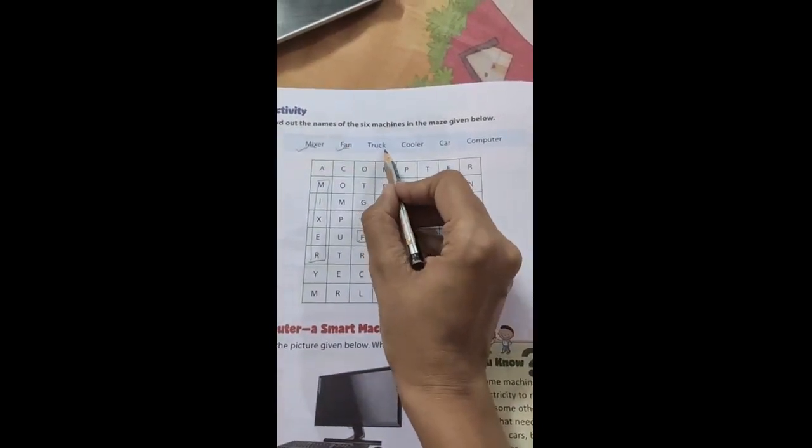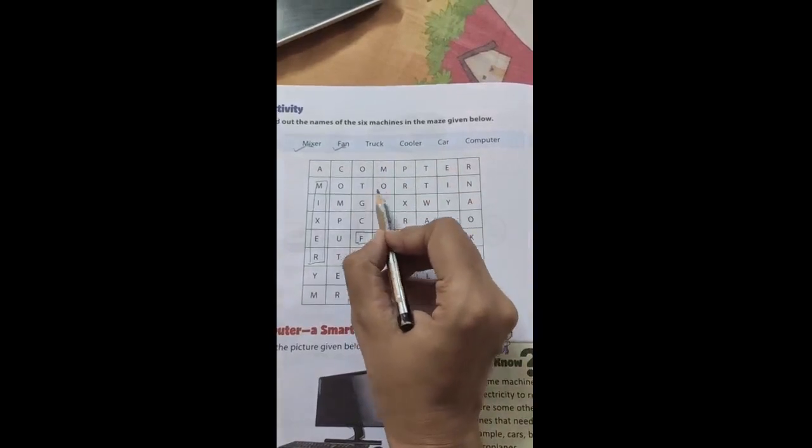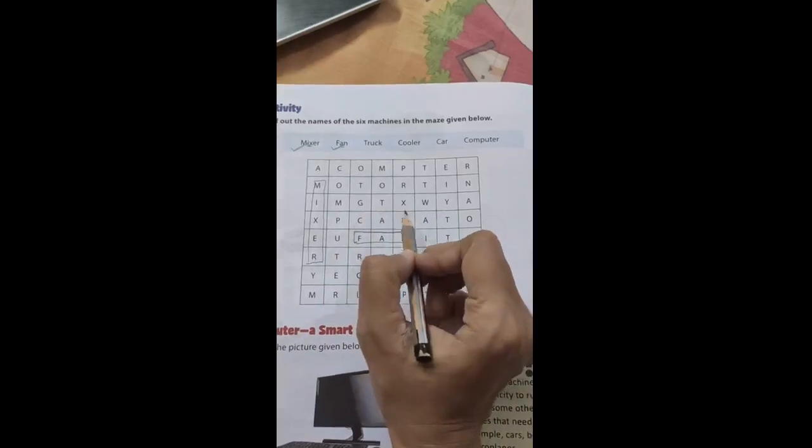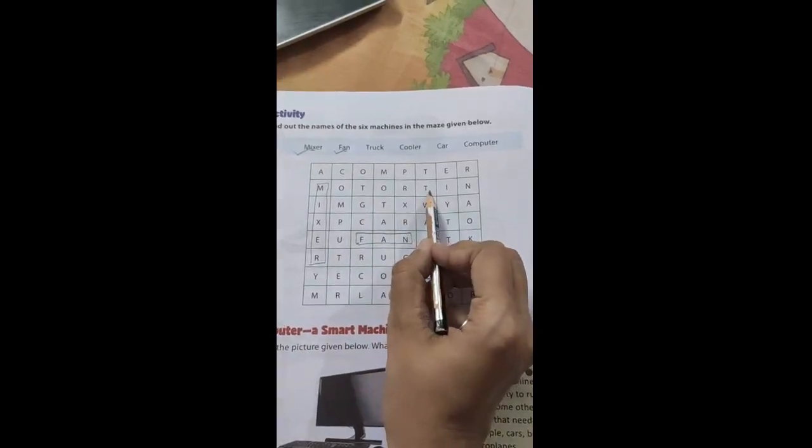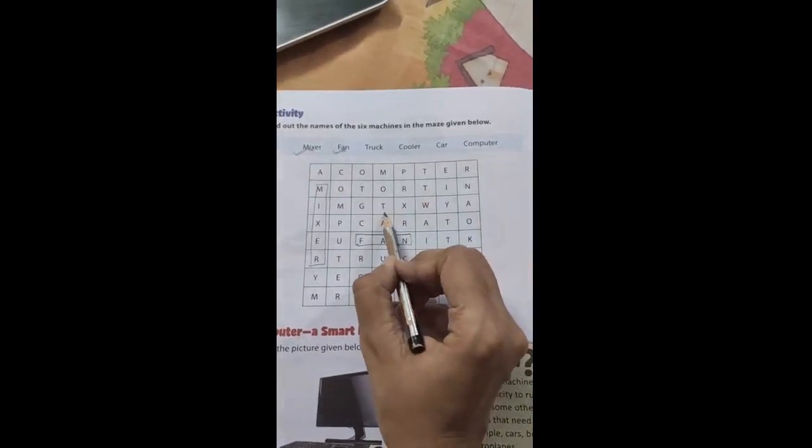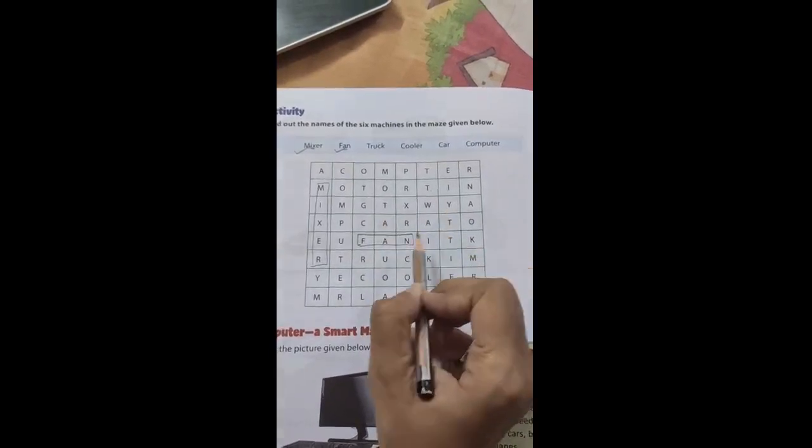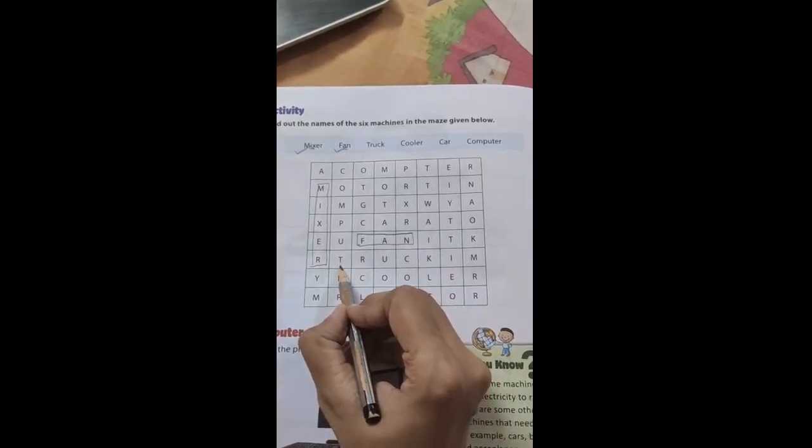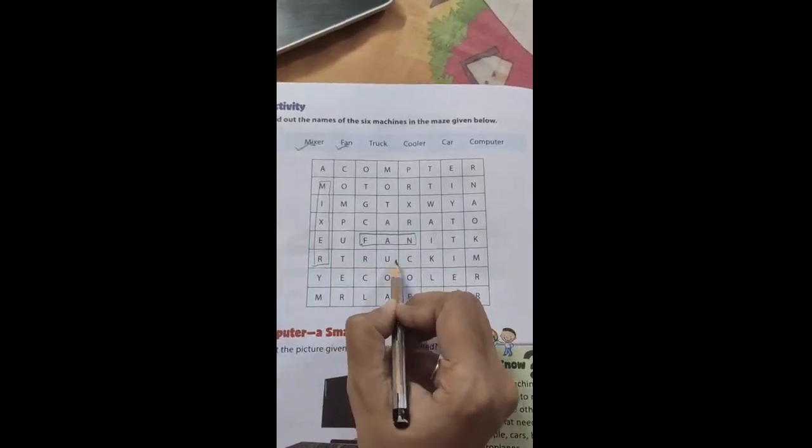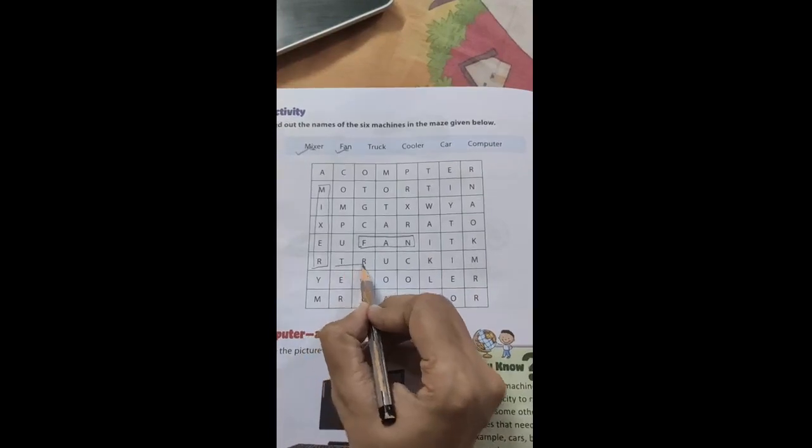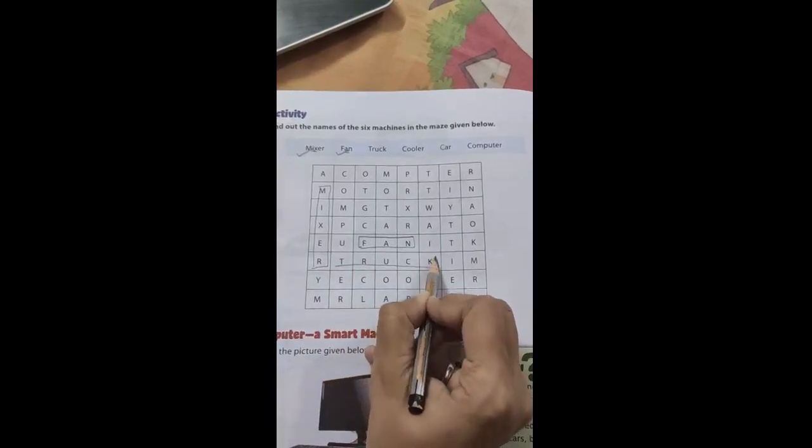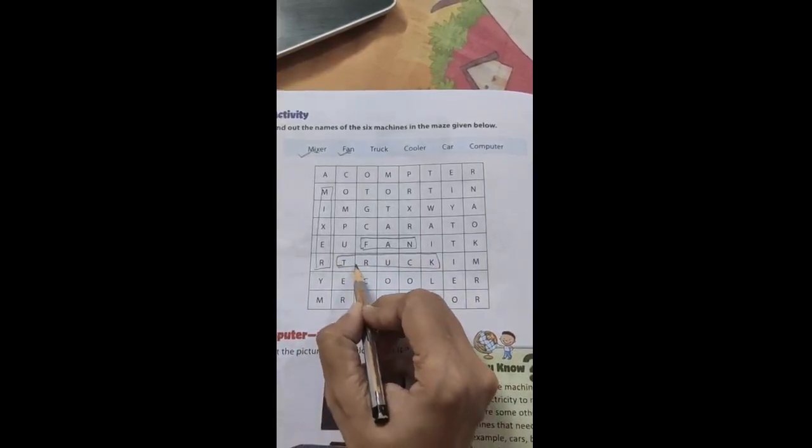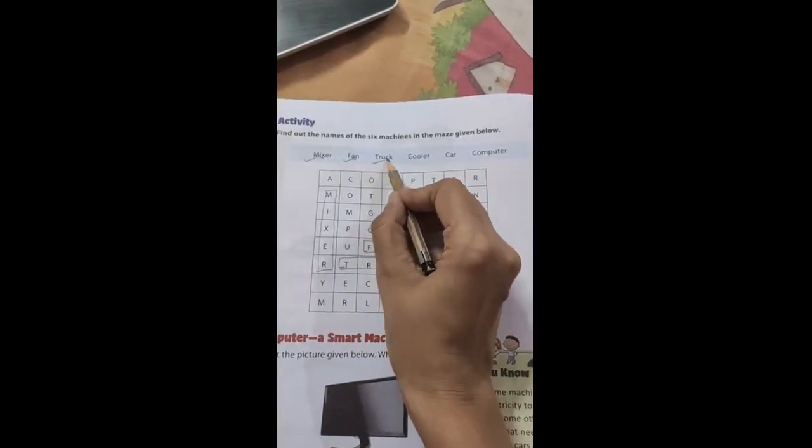Next is truck. We need to find T for it. This is T, but we are not getting R. Here also we are not getting R. Now this is T. Here also we are not getting R. Next, yes, here we are getting again T. Here is T. R-U-C-K, truck. We got very easily. This is truck from third last line. Truck also we got it dear children.